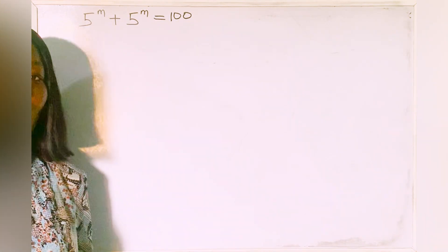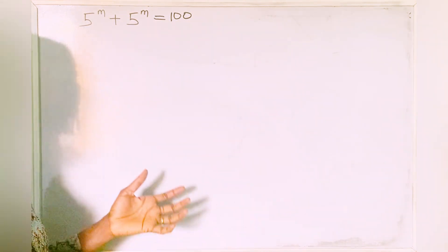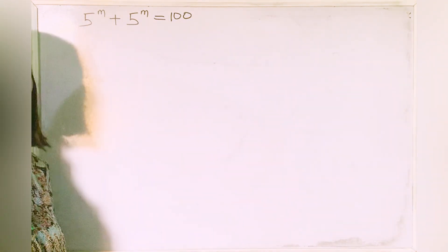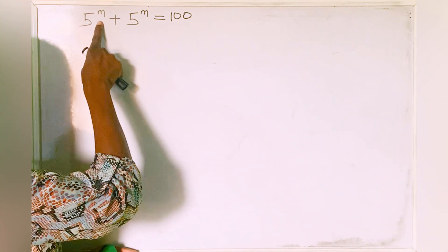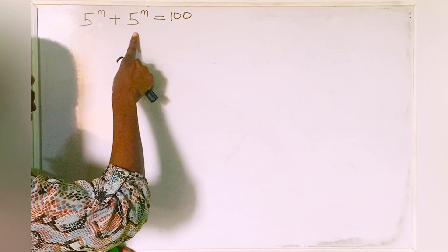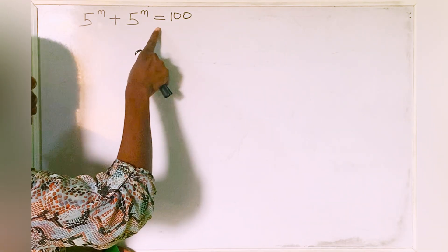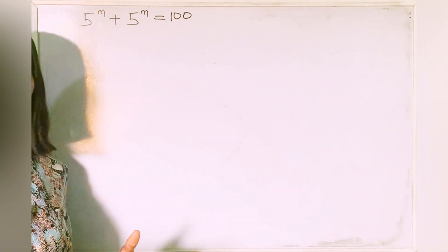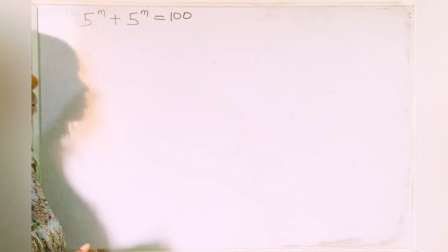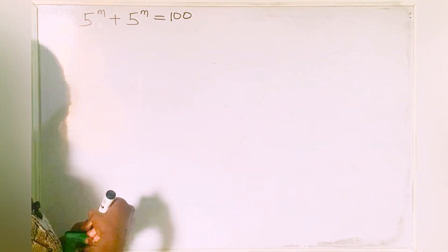Hello guys, welcome to my channel. Let's solve this equation together. We have 5 to the power of m plus 5 to the power of m is equal to 100. Now we are asked to find the value of m. So let's solve this.